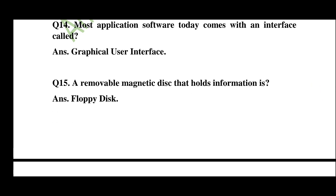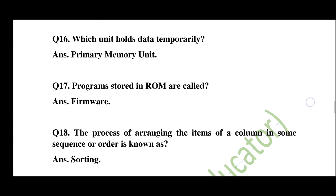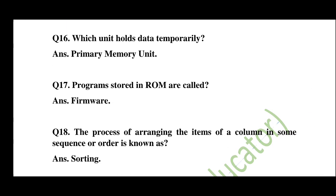Question 15: A removable magnetic disk that holds information is — answer: a floppy disk. Question 16: Which unit holds data temporarily? — answer: primary memory unit. Question 17: Programs stored in ROM are called — answer: firmware.